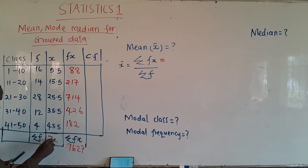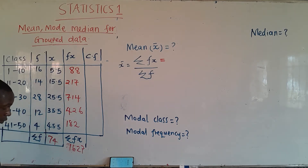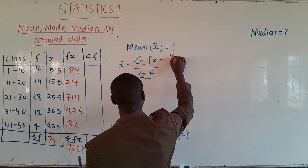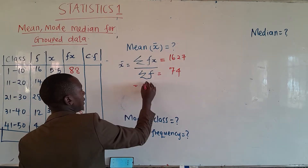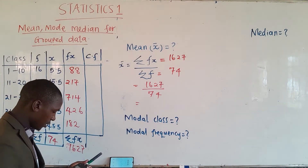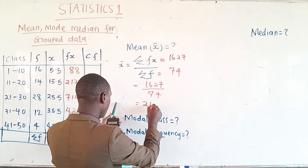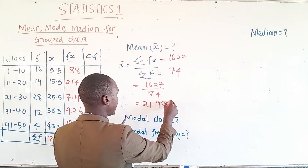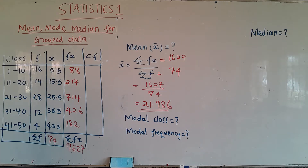Quick check on Σf: 16 + 14 = 30; 30 + 28 = 58; 58 + 12 = 70; 70 + 4 = 74. Confirmed. So Σfx = 1627 and Σf = 74. To get the mean we divide: 1627 ÷ 74 = 21.986. That is the mean for our data.